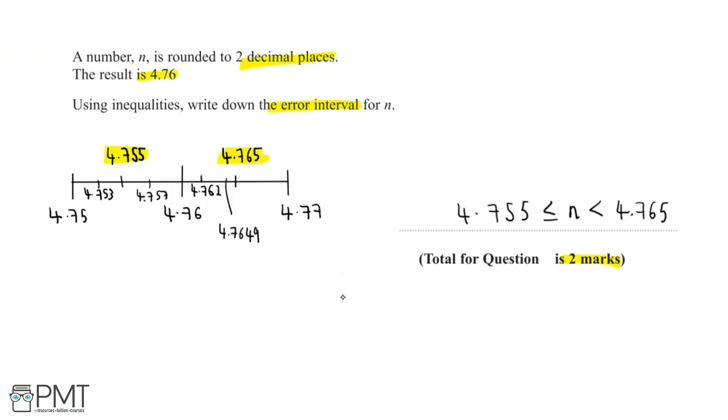This question is worth two marks, so let's take a look at where we'll get these two marks. The first mark is for including 4.755 as the lower bound, and making sure we have that including sign, which is the line underneath the less than, so that's our first mark. The second mark will be for identifying the upper bound as 4.765, but this is not including 4.765, and so we just have a less than sign without the line underneath.